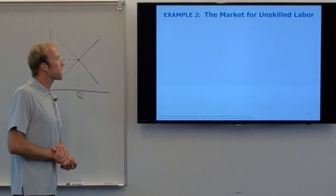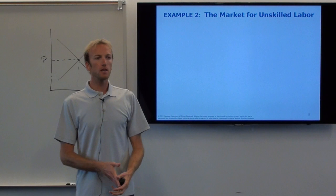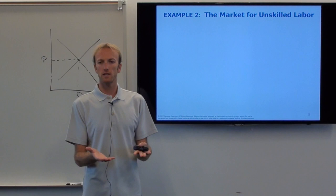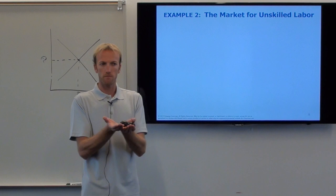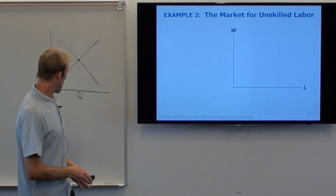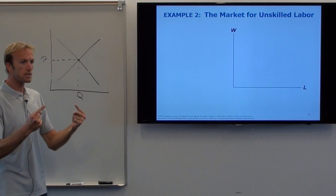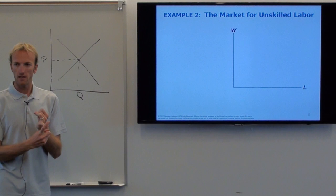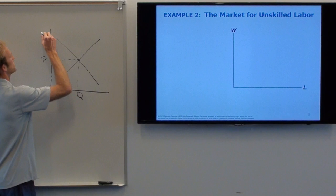Let's do example number two: the market for unskilled labor. People generally try to say you have to pay them at least a certain amount — which one was that? Price ceiling or price floor? Price floor. So let's examine the market for unskilled labor. Before we do that, we have to think a little because this is a weird market. Most markets, the demanders are the households and the suppliers are the factories.